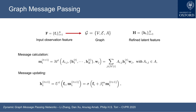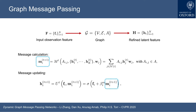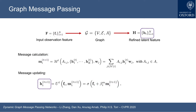First, we have an input feature. We can build a graph with nodes, edges, and affinities. After the message calculation and the message updating step, we can get the refined latent feature. For message parsing calculation, A is the affinity matrix, H is the latent feature, and W is the weights. This is our classical graph convolution formulation. After getting the message, we add the input observation, and then we can get the final latent feature.